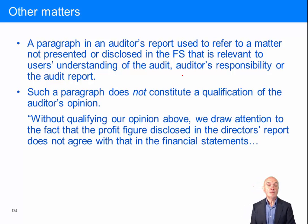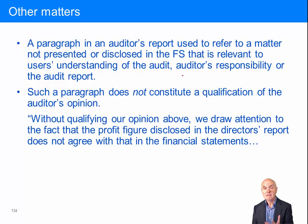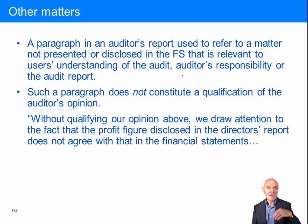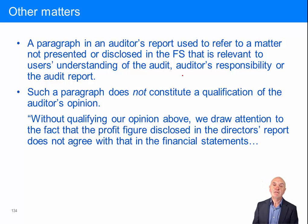An other matters paragraph, if required, is used to refer to a matter not presented or disclosed in the financial statements — nor should it be disclosed in financial statements — that is relevant to the user's understanding of the audit. For example: 'Without qualifying our opinion above, we draw attention to the fact that the profit figure disclosed in the director's report does not agree with that in the financial statements.' You can't have a modified opinion about the financial statements — we're saying the profit as disclosed in the financial statements is right, therefore the audit opinion is fine. But we're saying it's the stuff in the director's report that's wrong. Because people often look at the director's report before the financial statements, they're going to get mixed messages. So we're pointing out that what's in the director's report is inconsistent with what's in the financial statements. But we can't issue a modified opinion because the financial statements are still fine.